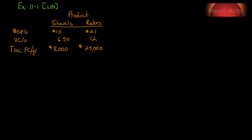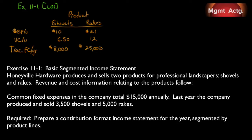Let's start doing problems — this is where the real learning happens. Exercise 11.1, learning objective one A: basic segmented income statement. Honeyville Hardware produces and sells two products for professional landscapers — shovels and rakes. Revenue and cost information relating to the products follow. Common fixed expenses total $15,000 annually. Last year the company produced and sold 3,500 shovels and 5,000 rakes.